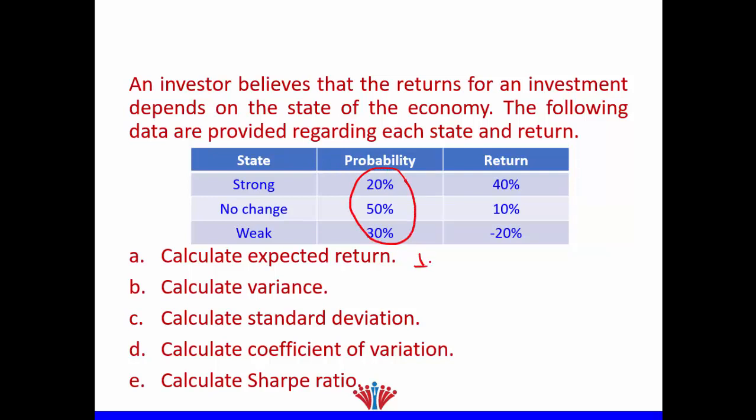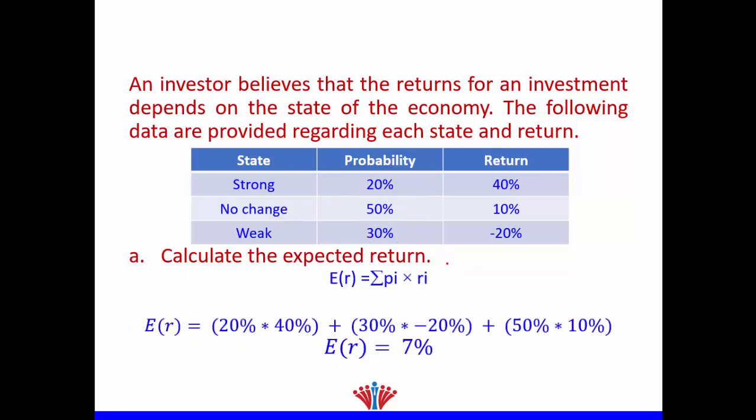We need to calculate five parts: expected return, variance, standard deviation (or volatility), coefficient of variation, and Sharpe ratio.